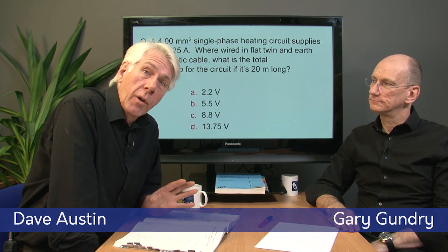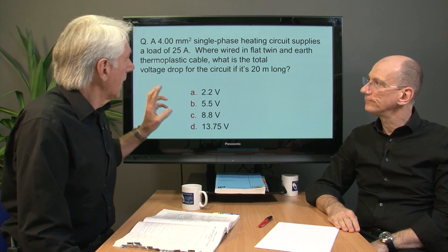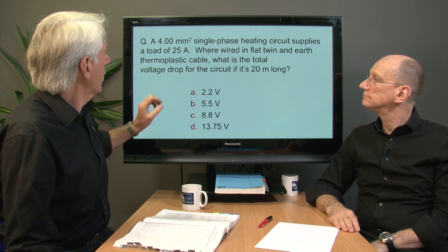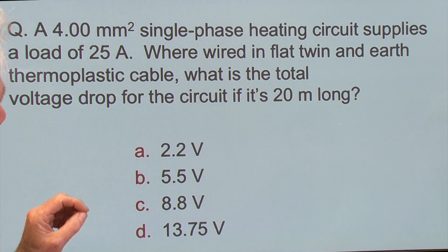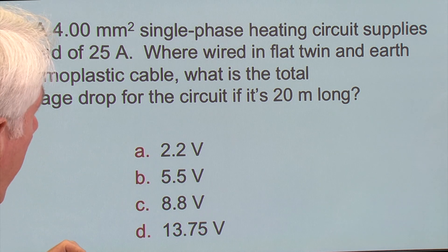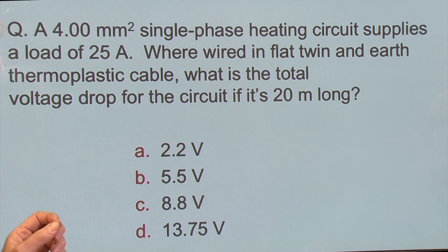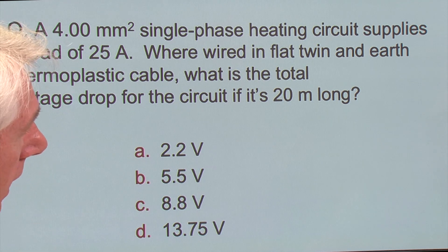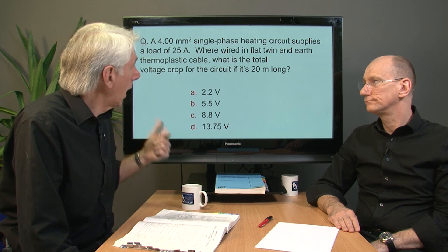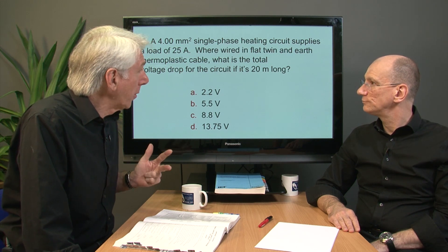Let's take a look at another question that involves voltage drop, but the difference between this one and the one we looked at previously in the series is we aren't given the voltage drop for the cable in the question. A 4mm² single phase heating circuit supplies a load of 25 amps, wired in flat twin and earth thermoplastic cable. What's the total voltage drop for the circuit if it's 20 metres long? So we've got the IB, the load current, and we've got the 20 metres, but we haven't got the all-important mV per ampere per metre.